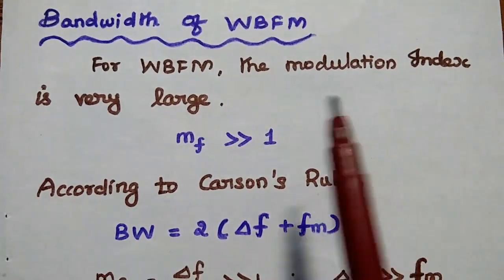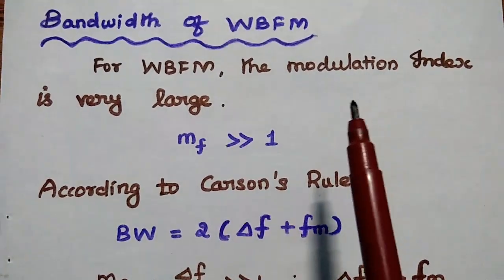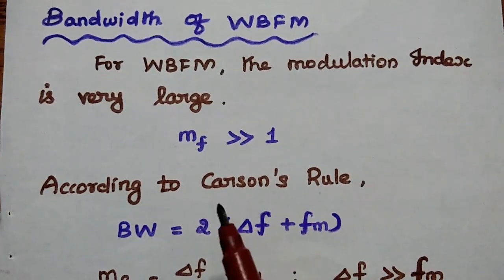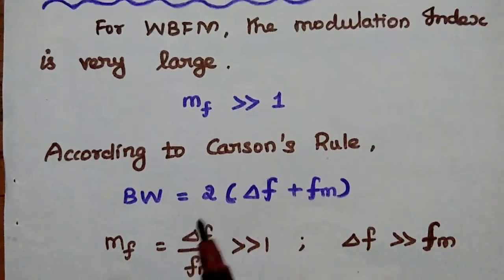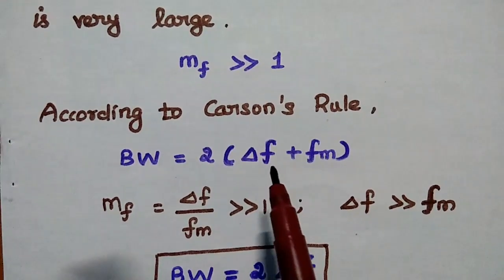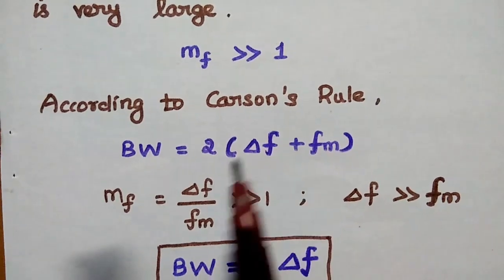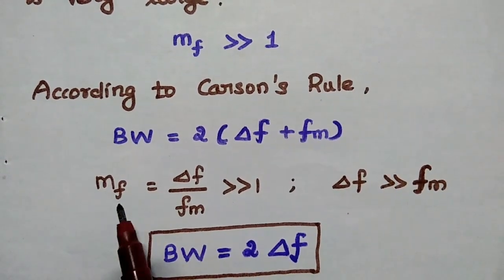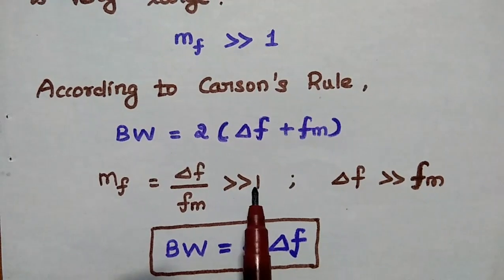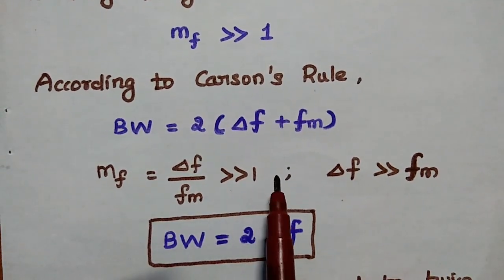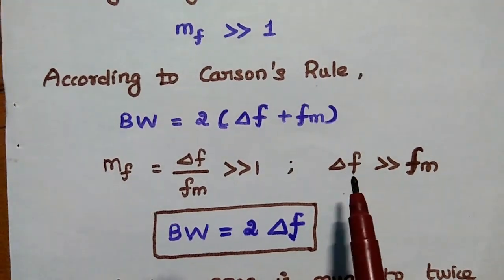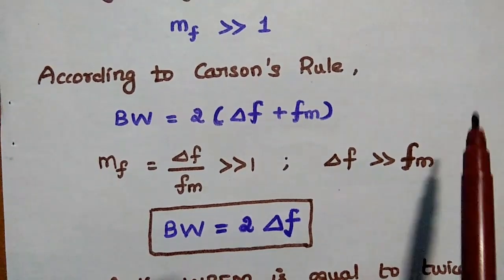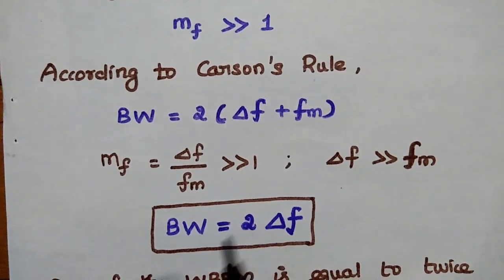For wideband frequency modulation, the modulation index is very large, that is mf is much greater than 1. According to Carson's Rule, bandwidth is equal to twice the sum of peak frequency deviation and modulating frequency. We know that mf equals Δf by fm, so Δf by fm is much greater than 1. Moving fm to the right hand side, we obtain that the peak frequency deviation is much greater than the modulating frequency. So here we can simply ignore the modulating frequency.